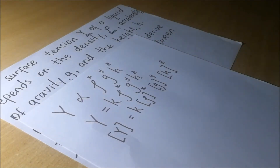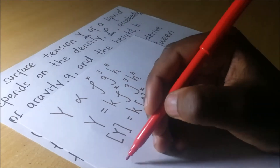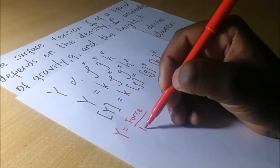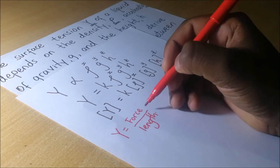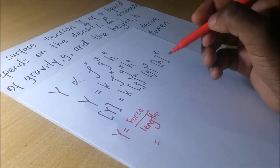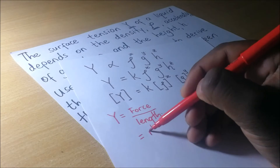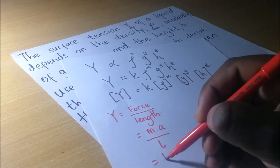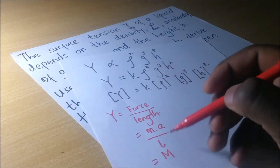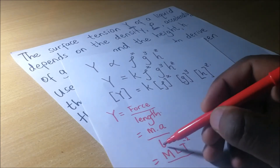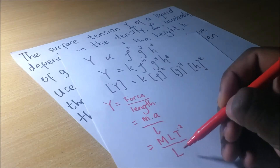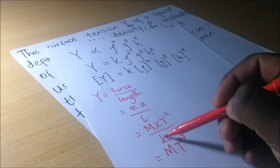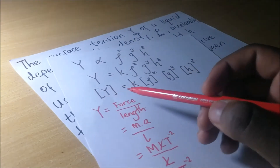Starting with Y, surface tension: from its definition, it is force per unit length. The dimensions of force are mass times acceleration, so M·L·T⁻², divided by length L. This gives us M·T⁻², since the two L terms cancel. Those are the dimensions of surface tension.